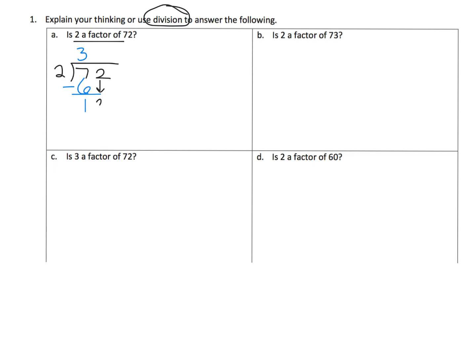And then we can say 2 goes into 12 6 times. So that's 6 times 12. I mean 6 times 2 is 12, so we subtract and we get 0.